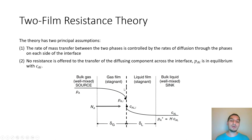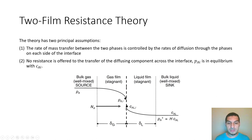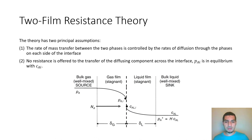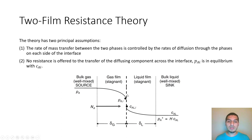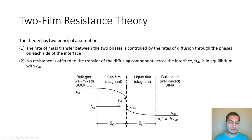We neglect the interface resistance, which means there is no driving force across it, so the partial pressure and concentration at the interface are in equilibrium. Based on these assumptions, all our calculations deal with the resistance due to the gas film and the liquid film in the two phases, and we don't account for interface resistance.